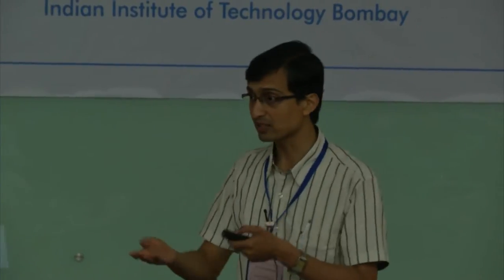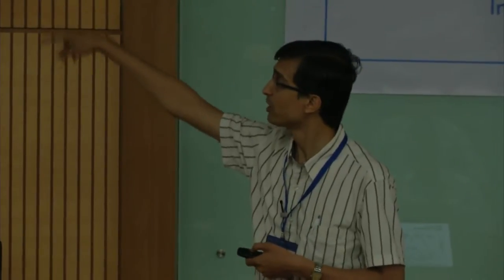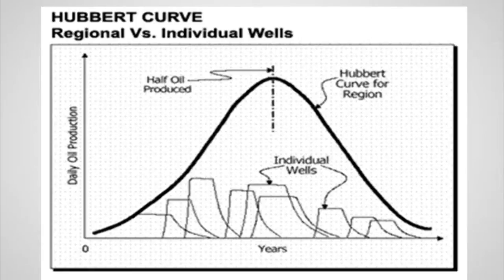You may see it in reports or on television, or your students may ask you what this is. This is the Hubbard curve — a bell-shaped curve representing the cumulative production of multiple wells or multiple regions. Each well starts producing, produces for some time, then gradually reduces its output. If you take the cumulative of that, it becomes a bell-shaped curve.